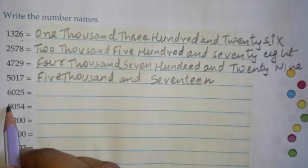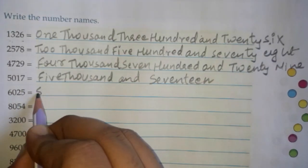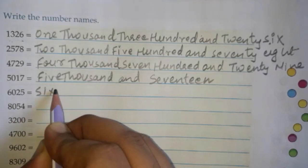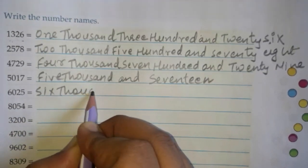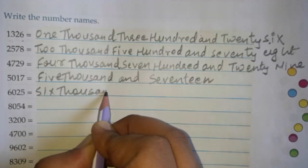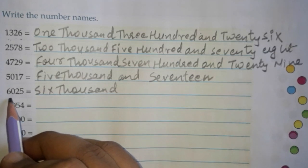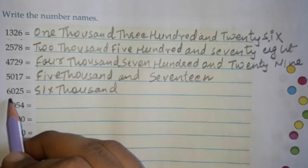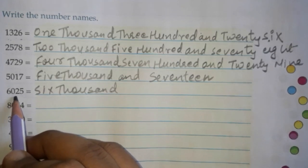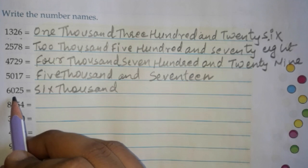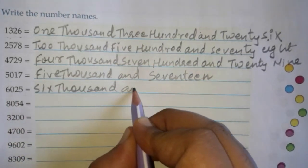Next is 6,025. 6 is on the thousands place, so six thousand. No number is on the hundreds place, so we leave it and go directly to the tens and ones: 2 and 5, that is twenty-five. So it is six thousand and twenty-five.